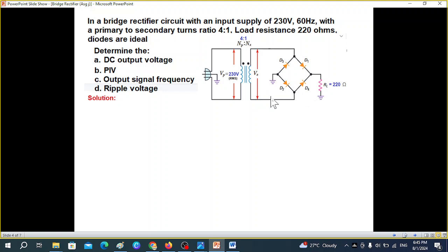And the parameters that are given here is like the input voltage 230 volt RMS. We know that in our household, all the voltages that we talk about are in RMS. So this is 230 volt RMS. The transformation ratio is step down transformer four to one. This is the load resistance given.